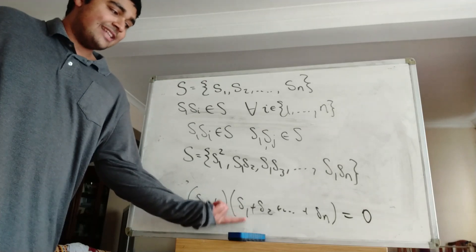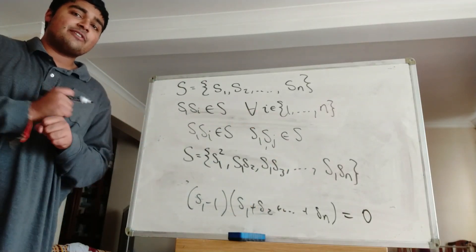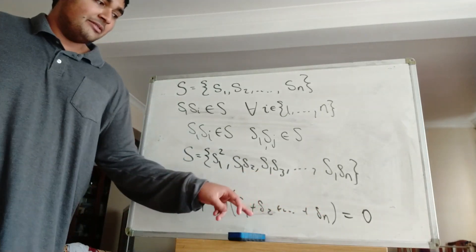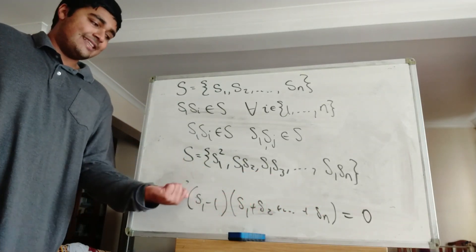Now, we have S1 plus S2 plus all the way up to SN, which is kind of what we want to do. We want to find the sum of the elements in S. And it seems like this guy here is going to be 0, provided we can cancel this thing from both sides.